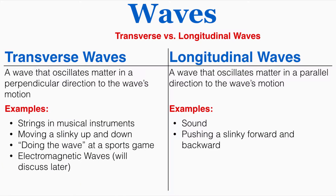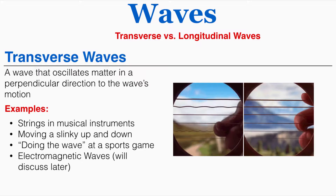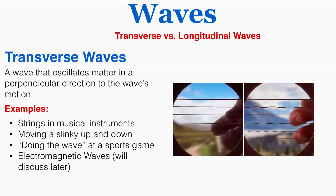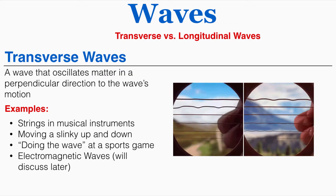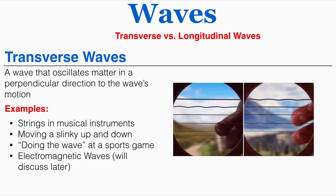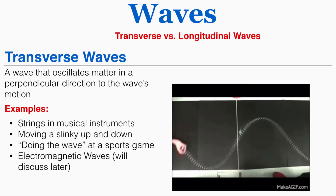For most tests you're going to need to be able to list some examples of both types of waves. One example of a transverse wave is a string in a musical instrument — you'll notice that transverse waves are being created when this person plucks the guitar strings, and this occurs with all stringed instruments. Moving a slinky up and down is another example of a transverse wave.